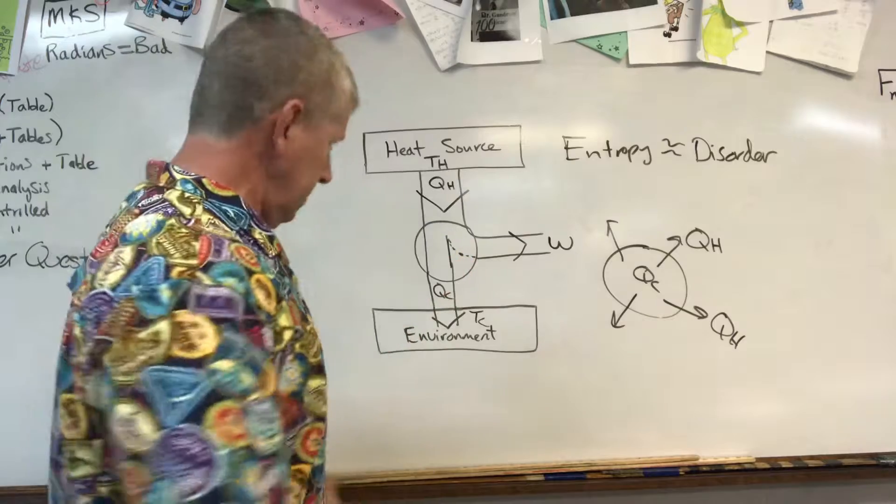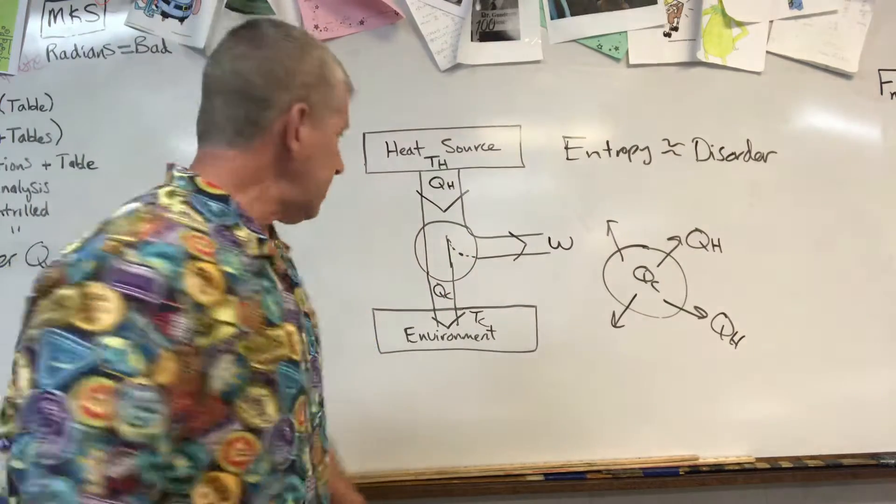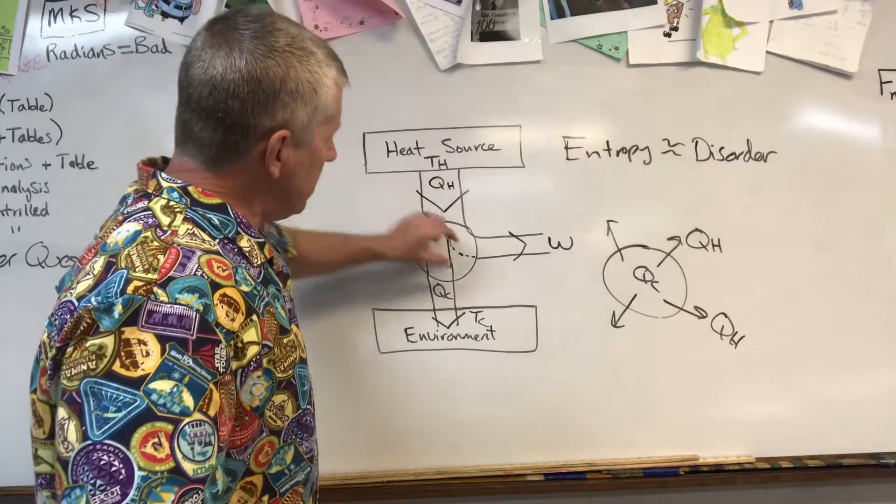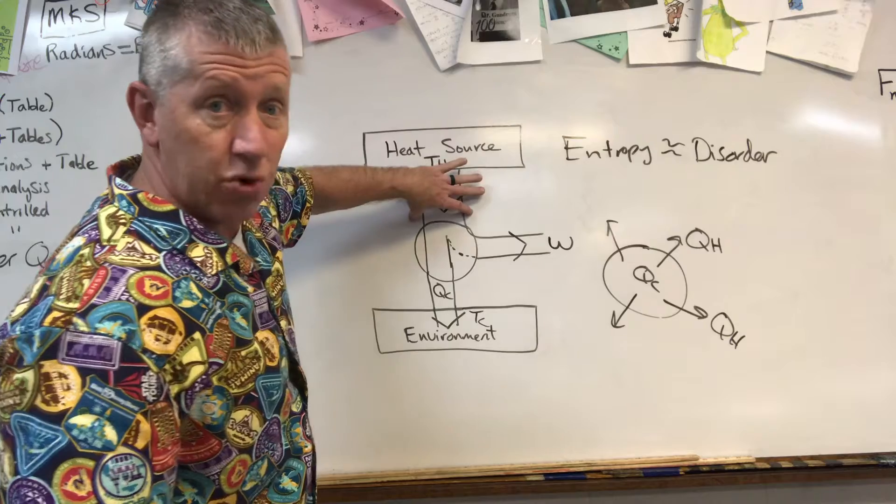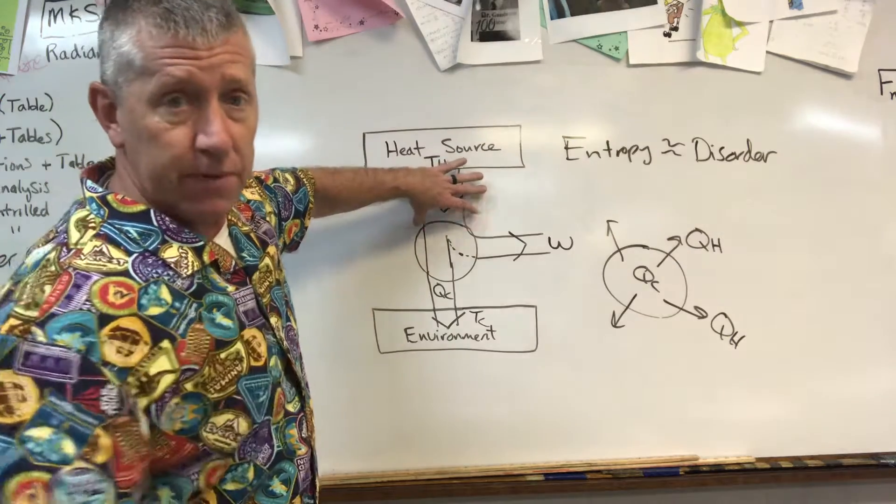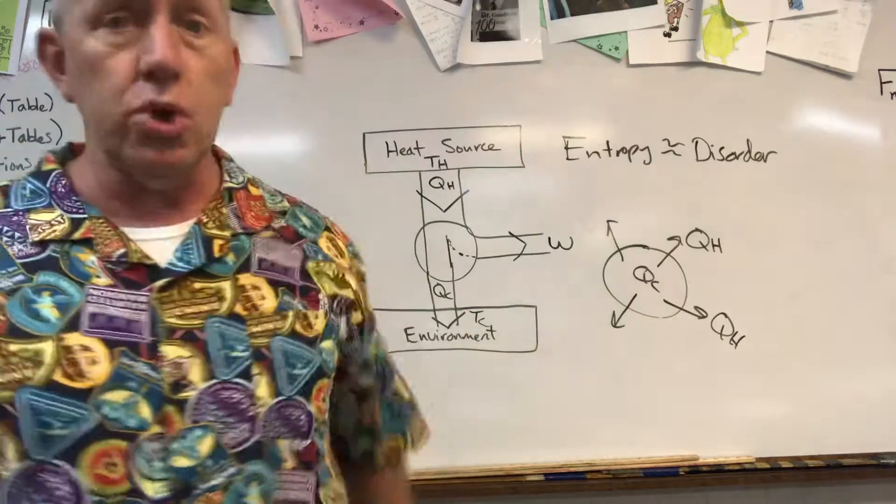So when I have you draw this schematic diagram out, and I will make sure that you have it, these two arrows total this arrow here. You can't be violating the first law of thermodynamics and creating or losing energy. Don't do it, don't be a law violator.